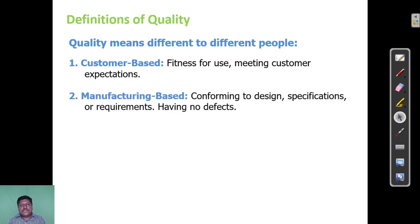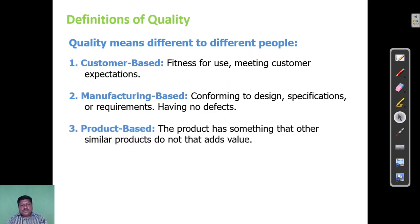The manufacturing-based definition is conforming to design specifications or requirements — having no defects. The product should have no defects, or it has to conform to design. The third definition is product-based: one product has some feature that is different from another product, and it performs better than the other. This is the product-based definition of quality.